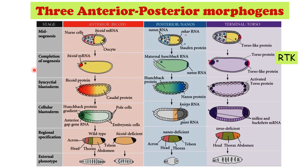During oogenesis, all these maternal genes start expressing themselves and form maternal mRNAs which help in determining the axes. After fertilization, by the time the syncytial blastoderm is formed, these mRNAs are translated into proteins that form protein gradients in the early embryo. This protein gradient helps in determining the sequence in which body segments will form, and hence helps in development of the anterior-posterior axis of Drosophila. So this is how the three maternal gene products — bicoid, nanos, and torso — help in formation of anterior, posterior, and terminal segments respectively in Drosophila.